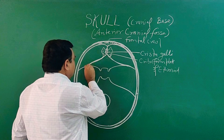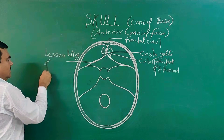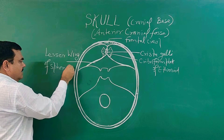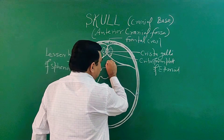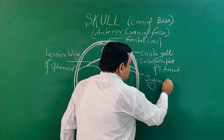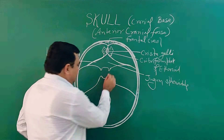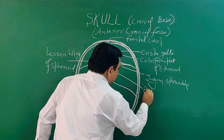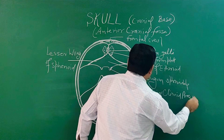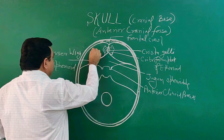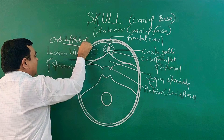This is the lesser wing of ethmoid. The anterior part of the body of ethmoid is known as jugum ethmoid. Here is the anterior clinoid process. And this part is the orbital plate of the frontal bone.